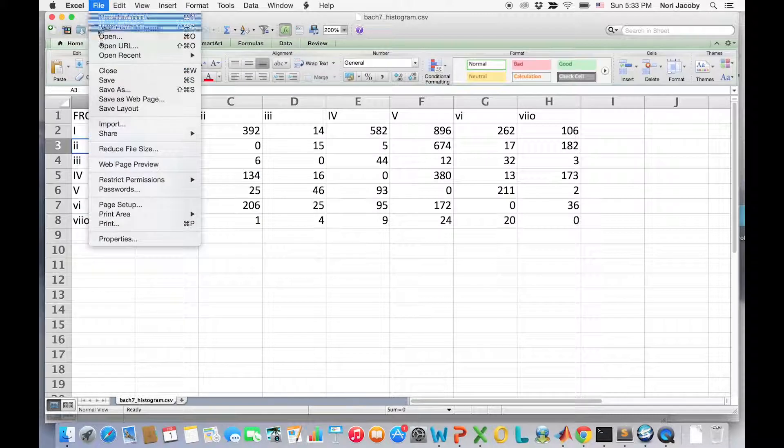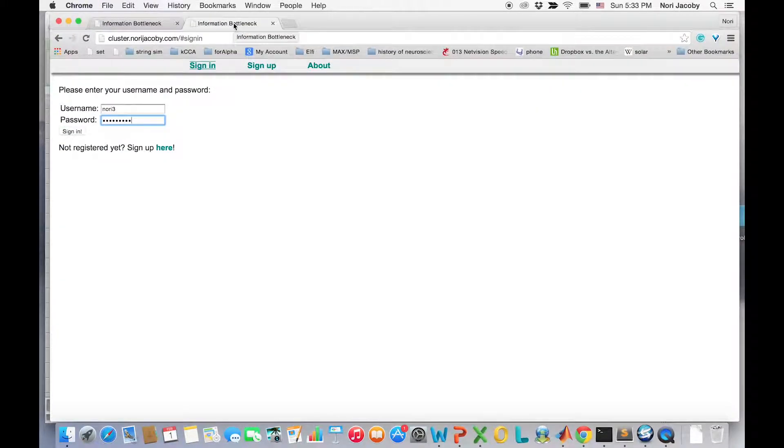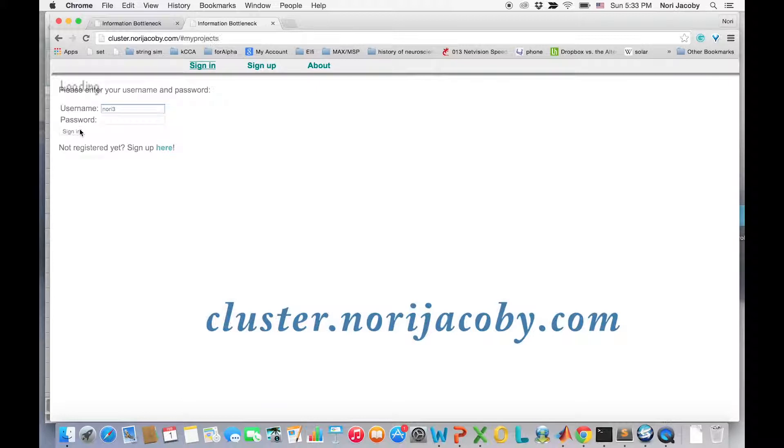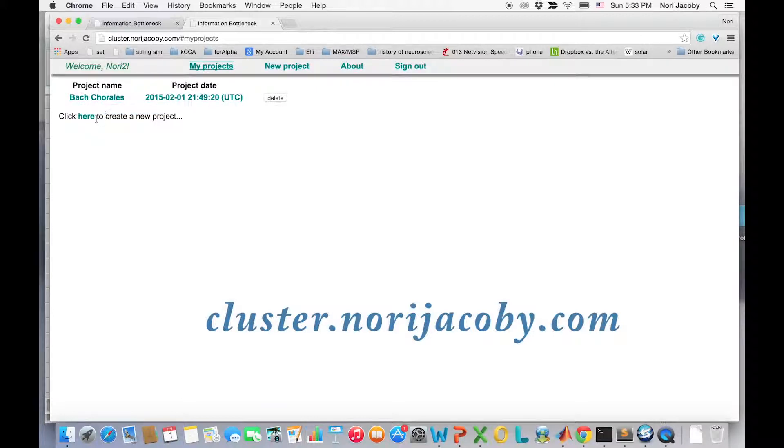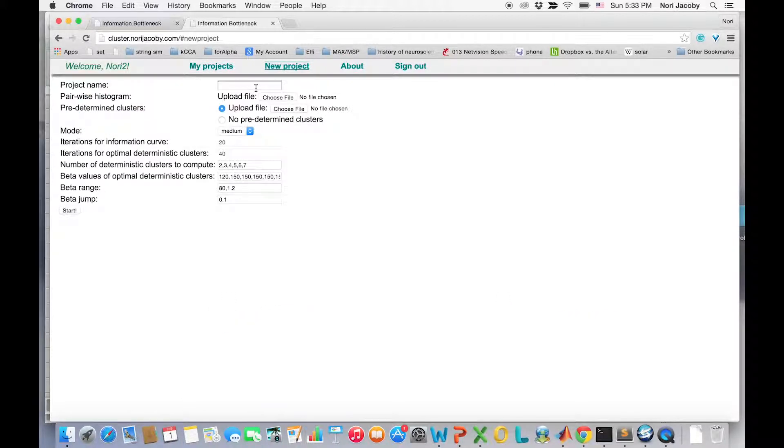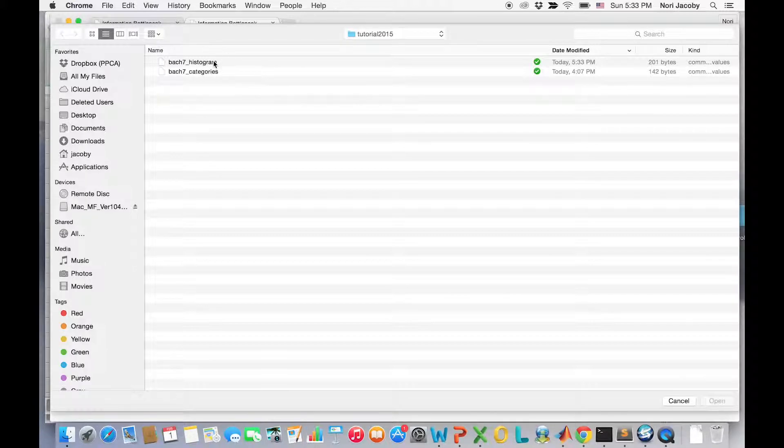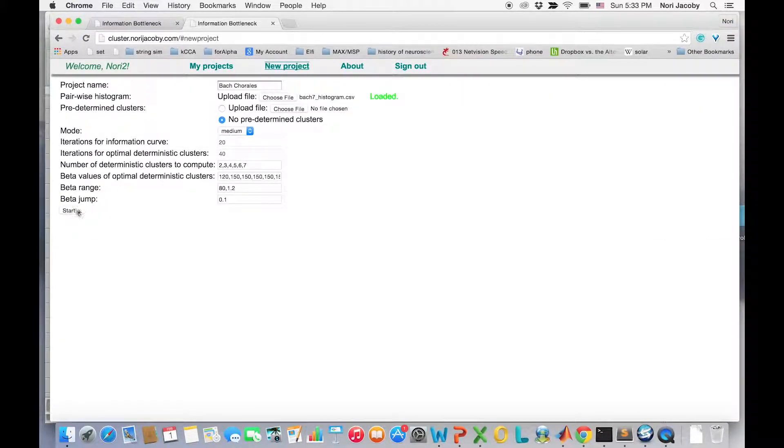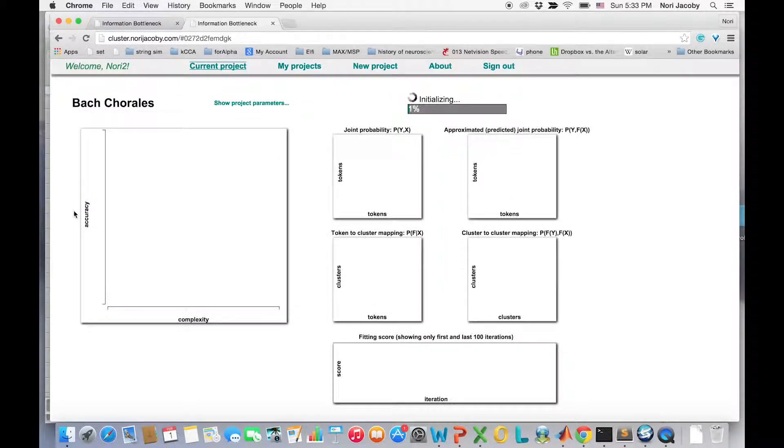We will use Excel to save the input files as a CSV file. Next step is to log into cluster.norijacobi.com. I create a new project and upload the input file that we have just created to the applet. I select the option no predetermined clusters and hit start.